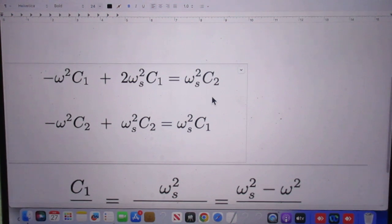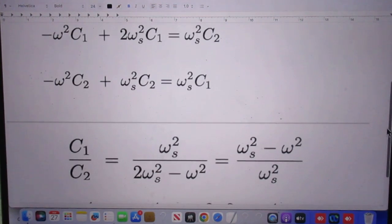For this equation, C1 over C2 must be the same as for this equation, C1 over C2. In other words, I can write down this as a C1 over C2 equation, and I can write this as a C1 over C2 equation. And that's done here.